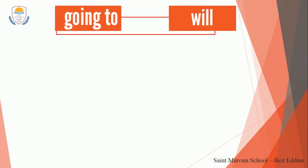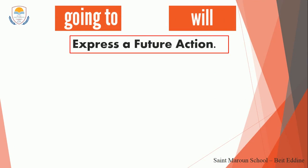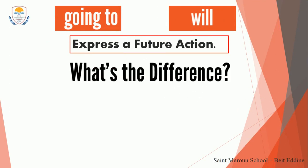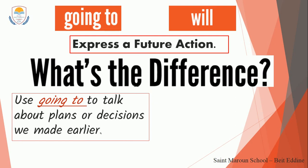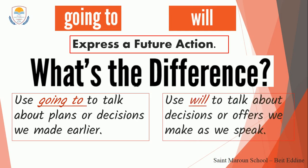'Going to' and 'will' have the same use — I use them to express a future action, something that is going to happen in the future. But what is the difference between them? I use 'going to' to talk about plans or decisions we made earlier, meaning I already thought about it and decided. And I use 'will' to talk about decisions or offers that we make as we speak, at the same moment of speaking — decisions we didn't plan for.